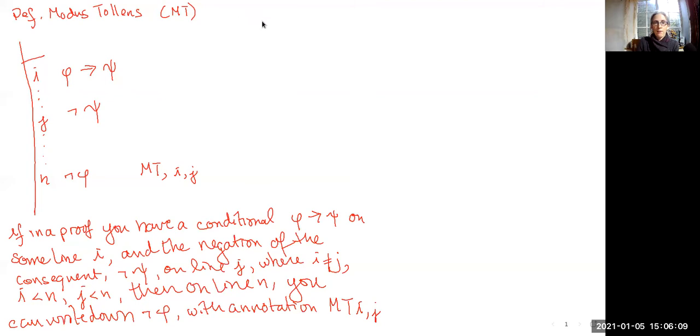So suppose that we have a proof, do it over here in a different color, where at line i we've got our conditional with some sort of annotation at that line, we don't know what it is, doesn't really matter. Go down a bit, and then at line j we have the negation of the consequent, again with some annotation we don't know what.